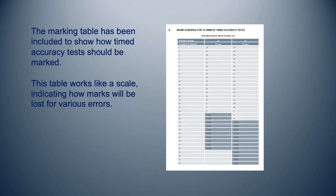A marking table has been included to show how timed accuracy tests should be marked. This will help students understand the way they are evaluated, because timed accuracy tests are marked differently. This table works like a scale, indicating how marks will be lost for various errors.